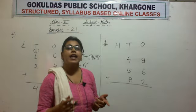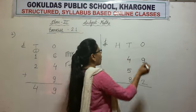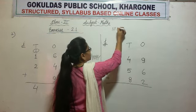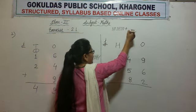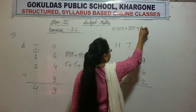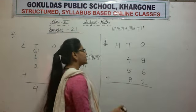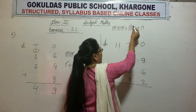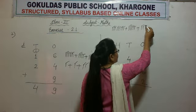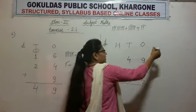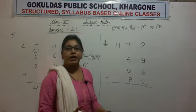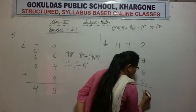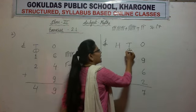I am drawing sticks here since I don't have sufficient space. We draw 9 sticks for 9, then 6 sticks for 6, then 2 sticks for 2. Let us count: 1, 2, 3, 4, 5, 6, 7, 8, 9, 10, 11, 12, 13, 14, 15, 16, and 17. We got a 2-digit answer, so we regroup: we write 7 in the 1's column and carry 1 to the 10's column.